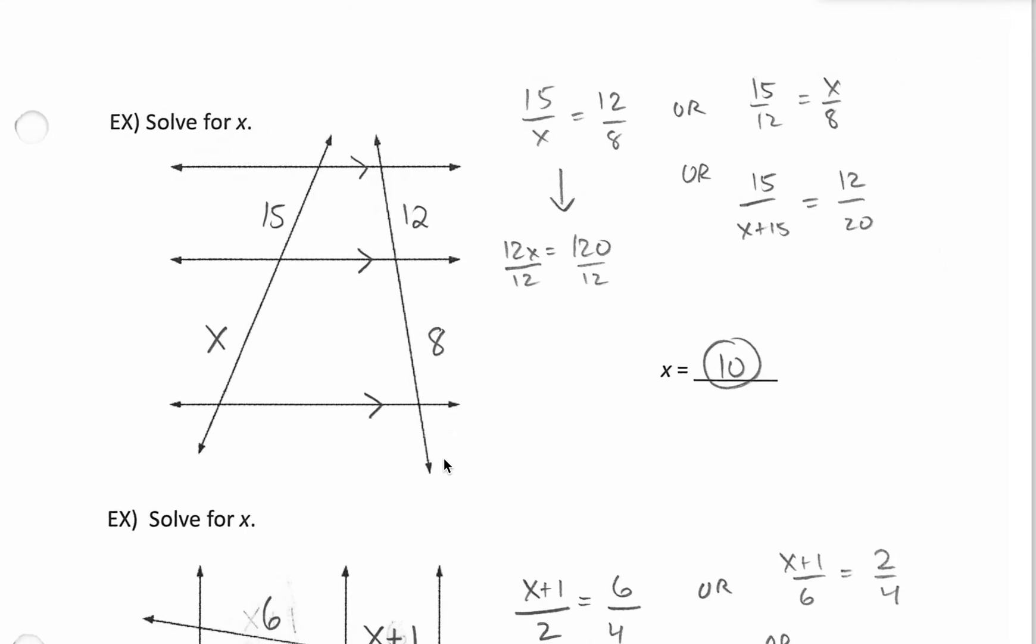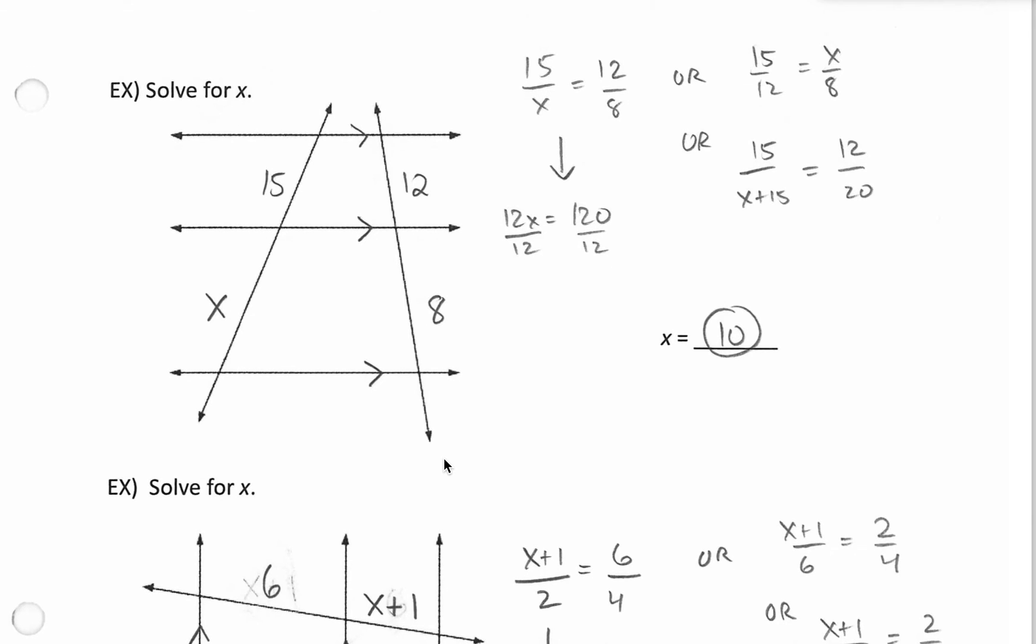And we just continue to do more the same thing here. To solve for X in this, I can compare the top left to the bottom left. 15 to X. And do top right to bottom right. 12 to 8. Cross multiply. X times 12 is 12X. 15 times 8 is 120. So one step divided by 12 and you get your X value is 10.